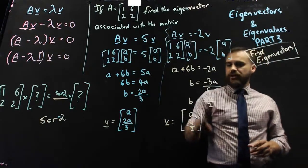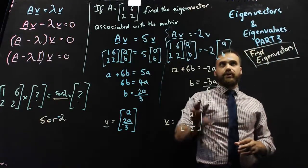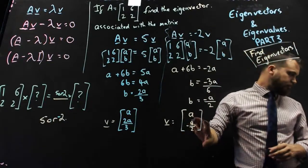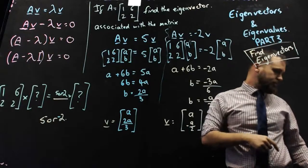Or they can take the value a, negative a over 2. So an infinite number of eigenvectors there as well. It's eigenvectors, eigenvalues, how to find eigenvectors. Thank you.